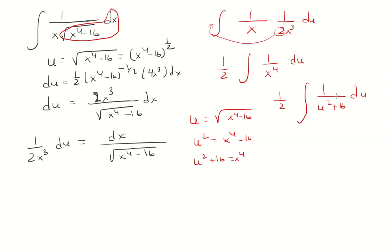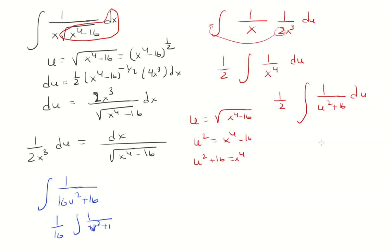To solve the integral we need another substitution. We want the denominator to look like 16v squared plus 16, so we can factor out the 16 and get 1 over v squared plus 1 — that's just our arctan form. So we set u squared equal to 16v squared, and taking the square root gives u equals 4v, or v equals u over 4. That will be our substitution.